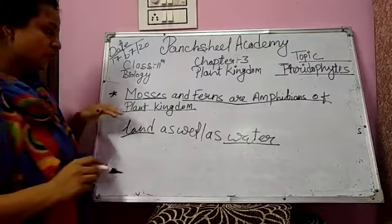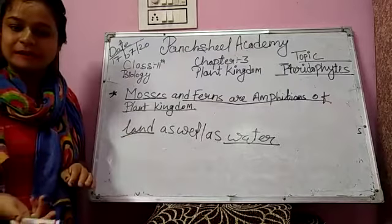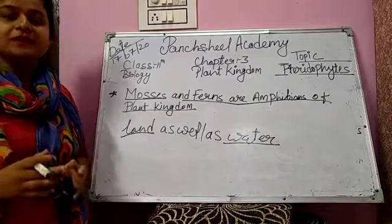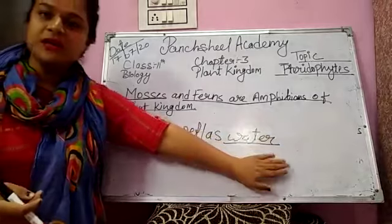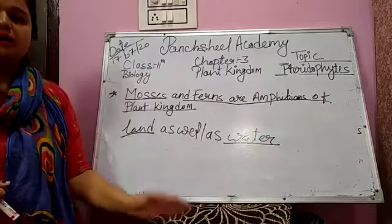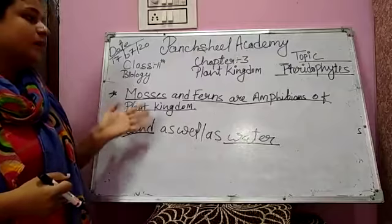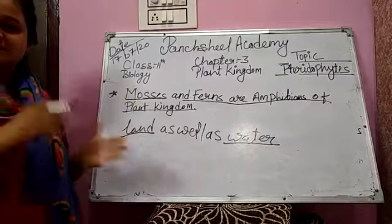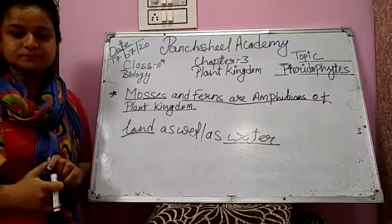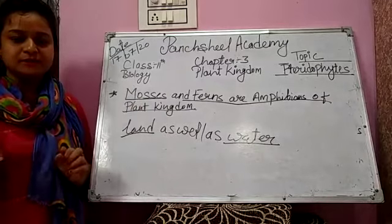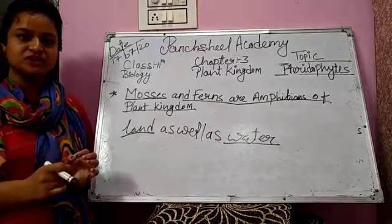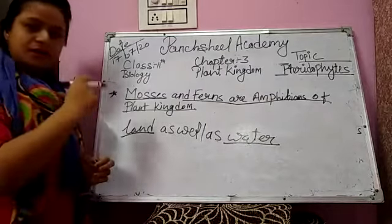I hope that topic is clear. Mosses and ferns complete their life cycle on land as well as on water, and at the time of reproduction or fertilization, it occurs in the water. That is why they are called amphibians of the plant kingdom.